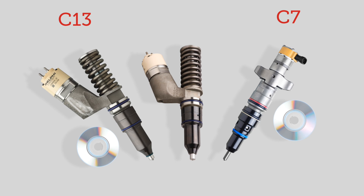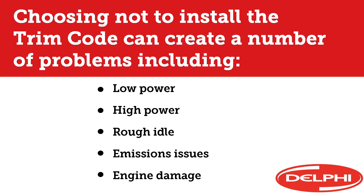Each Delphi C7, C13, and C15 injector is supplied with a CD disk containing a unique trim code file. The trim code file should always be uploaded to the engine ECM during injector installation. Choosing not to install the trim code can create a number of problems, including low power, high power, rough idle, emissions issues, and in severe cases, engine damage.